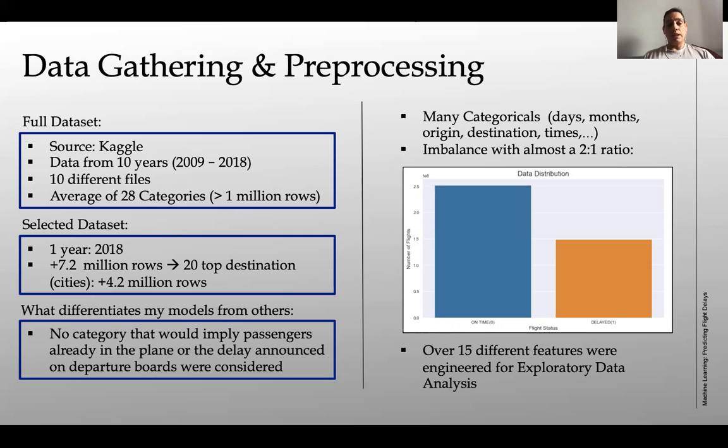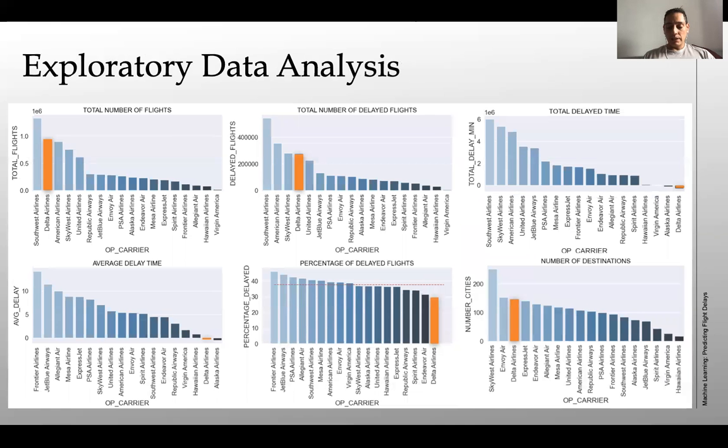Additionally, to those 28 categories that I already had, over 15 different features were engineered for exploratory data analysis. So this is quite a rich data set that gives you the possibility of doing a lot of EDA.